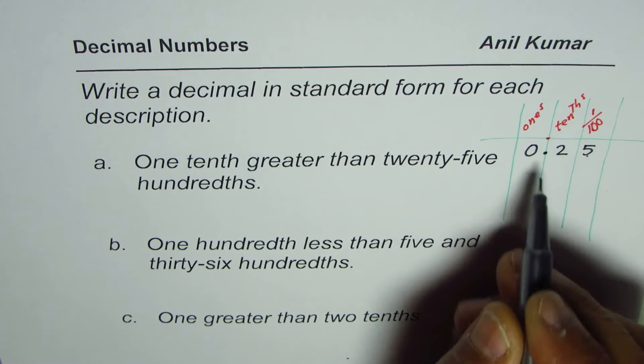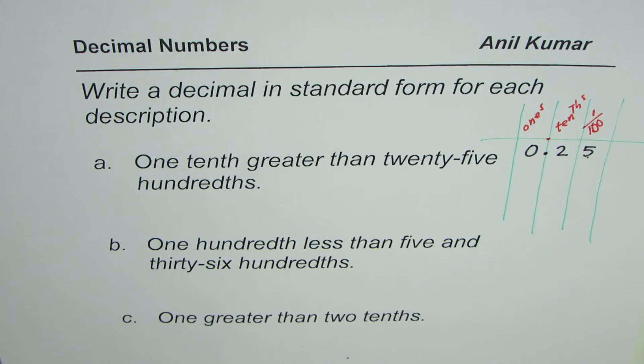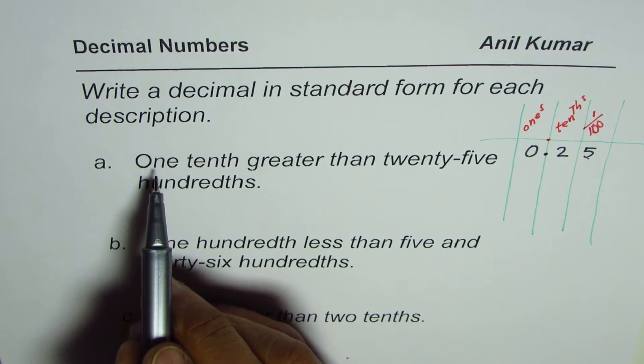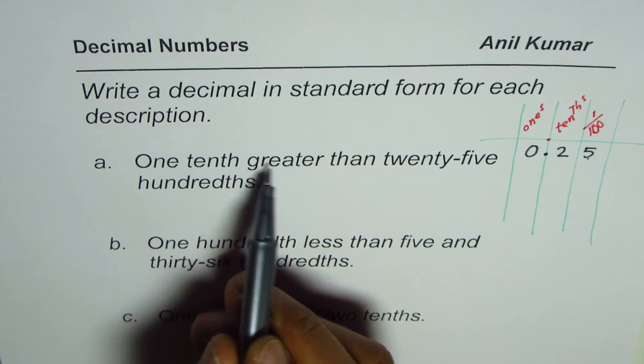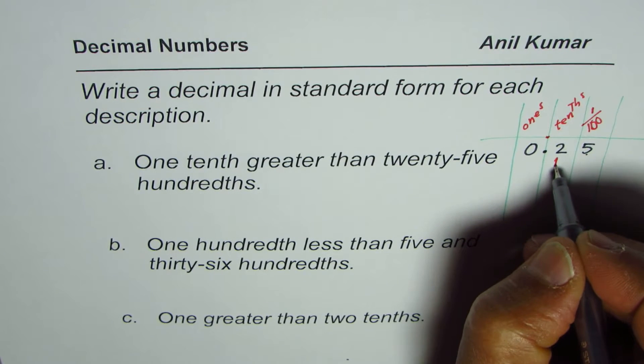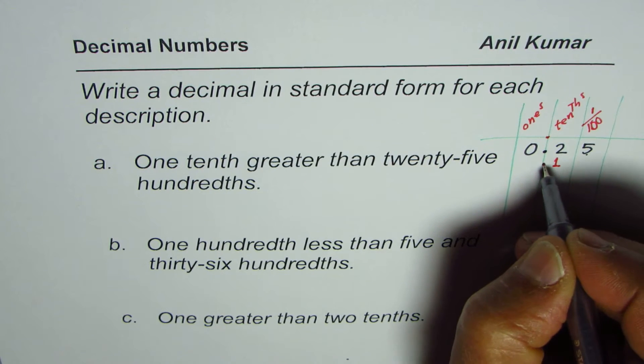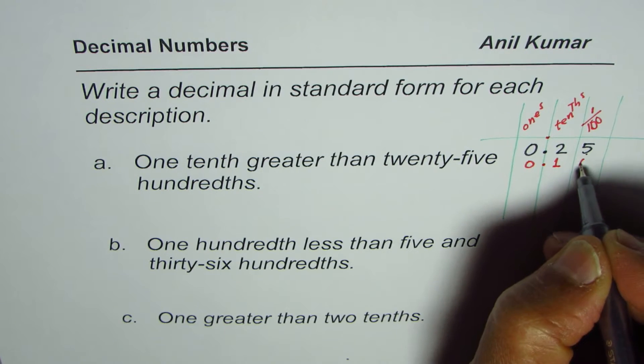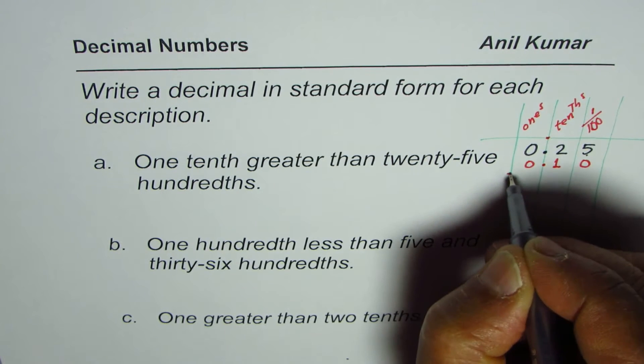You could write this number as 0.25. We have to write a number which is one-tenth greater than. One-tenth greater will mean at this position, we have to add one in the tenths place. So basically, you are adding this number here to get the answer.